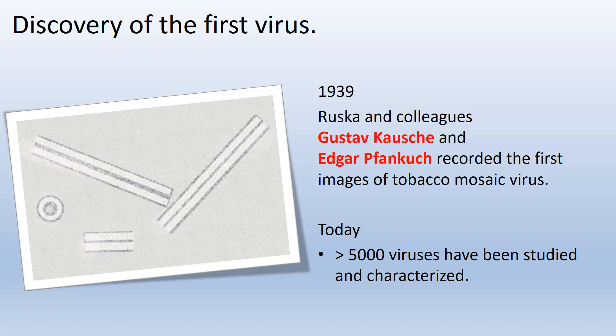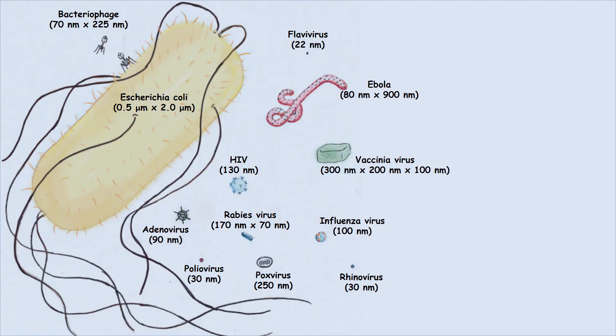Electron micrograph images of viruses offered visual proof of their association with various infectious agents and defined them morphologically. As these early experiments suggested, viruses are indeed much smaller than bacteria, ranging from 20 nanometers to 900 nanometers. The Ebola virus is one of the larger viruses, measuring 80 nanometers wide by 900 nanometers in length, whereas the rhinovirus causing the common cold and the pox virus causing smallpox are on the smaller end of the scale, around 30 nanometers in diameter — all well below the resolution of a compound light microscope. As a point of reference, bacteria are measured in the micrometer scale, and one micrometer is equal to one thousand nanometers.